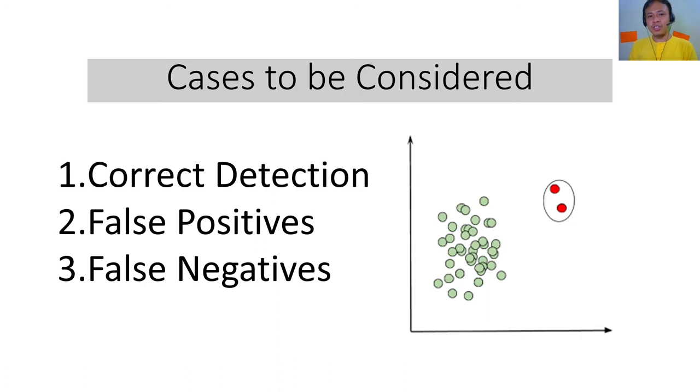What is correct detection? This actually happens when the abnormality that we have detected in the observation exactly matches the abnormalities that we can see in the process.